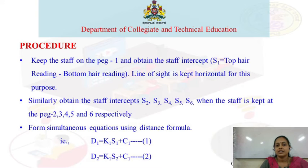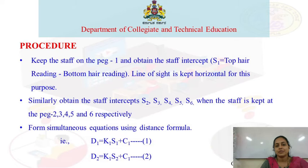Similarly, obtain the staff intercepts S2, S3, S4, S5, and S6 by placing the staff on each peg and noting the staff intercept.